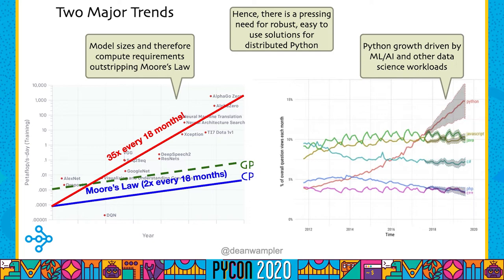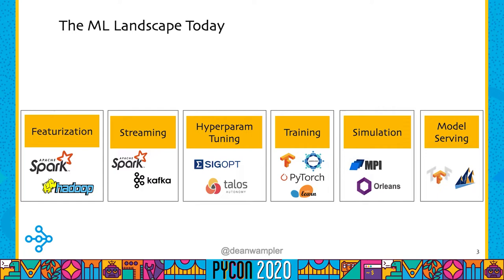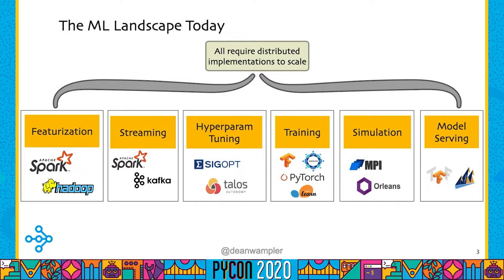Looking at the ML landscape today, there's a bunch of tasks you have to do. Featurization is about figuring out what aspects of your data are most useful for doing predictions. We often process data in real time with streams. Hyperparameter tuning is about picking the best model structure, and once we have that, we have to train our models. For reinforcement learning, you're often running game simulators or other kinds of simulators. And then once you've got these models trained, you have to serve them. Pretty much all of these things require distributed implementations to scale effectively.